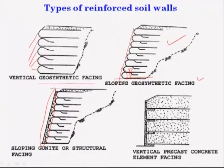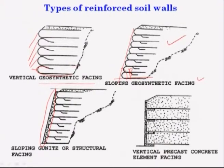The fourth one is vertical precast concrete element facing. You can construct it by means of geosynthetic — taking one reinforcing material, folding it, filling the soil, then taking another reinforcing material and folding it. So what happens? No structural element is required with this approach.